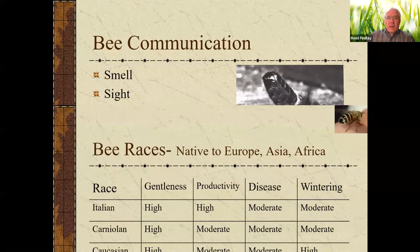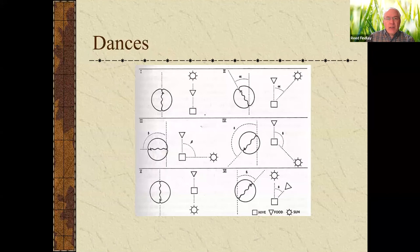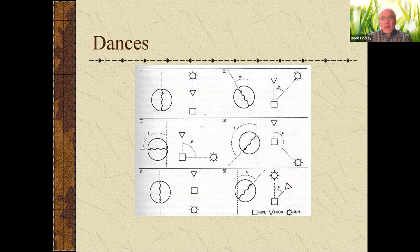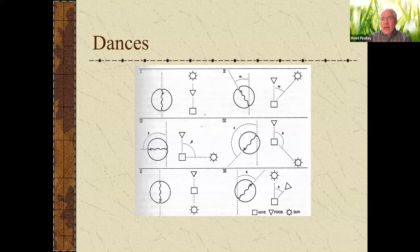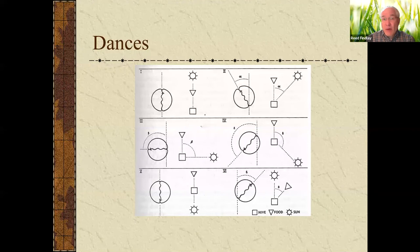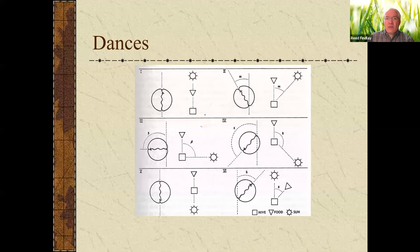Let's talk about bee communication. There's the bee dance. The bee dance isn't as important as once thought, even though bees do the dance and orient themselves on the frame to give a direction of where pollen and nectar are. Through recent studies, they found out that pheromones and scents the bees give off — and also the scent of the flower on the bee itself — has a lot more to do with bees finding their nectar source.